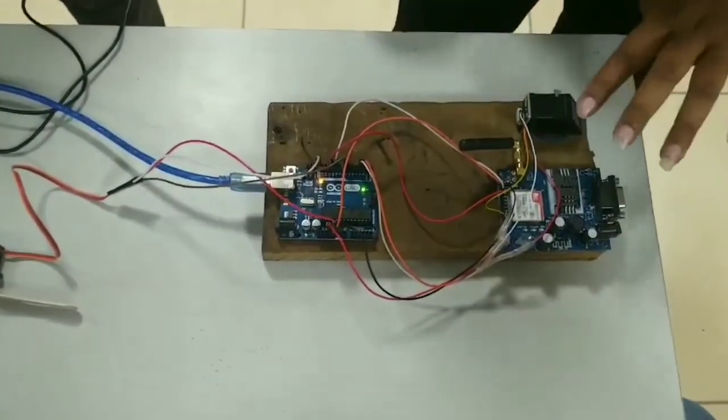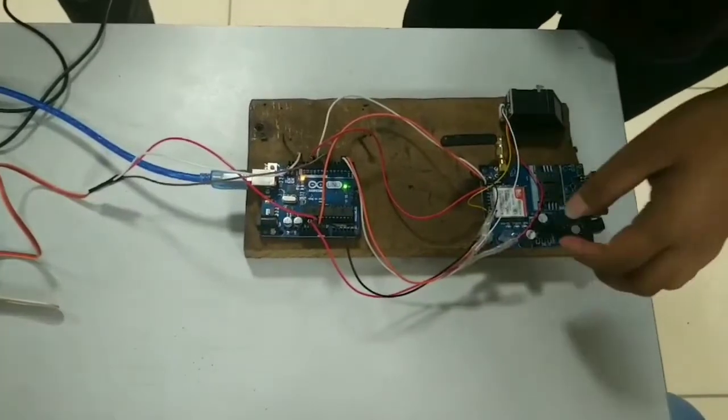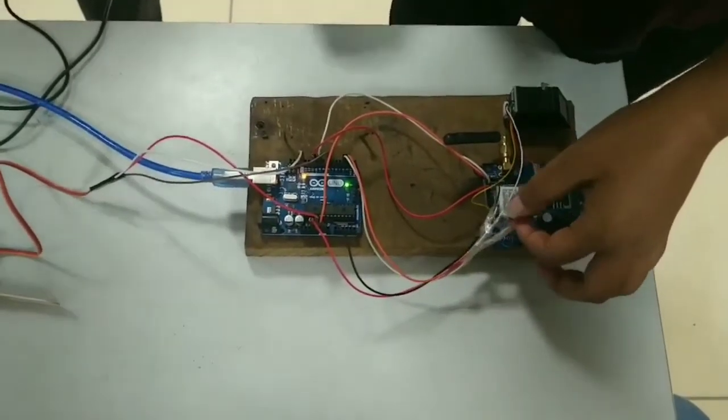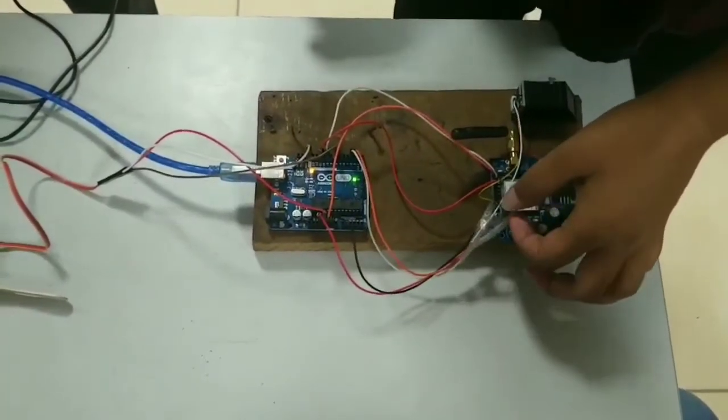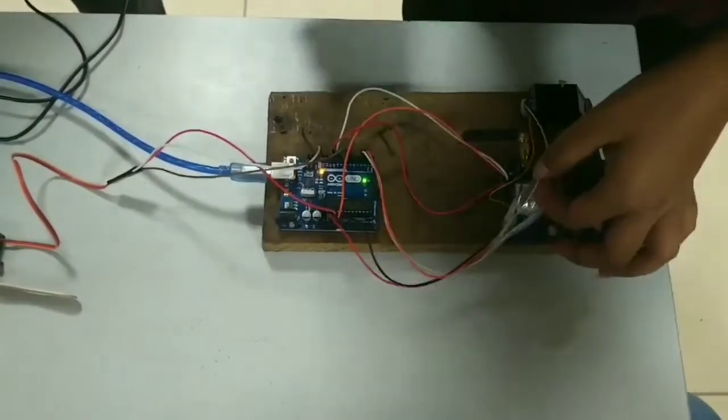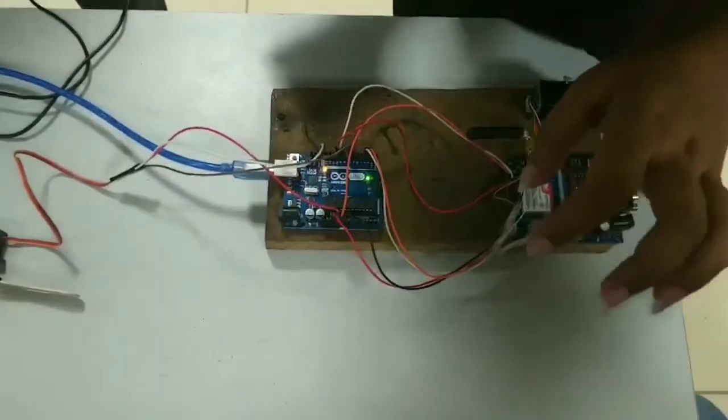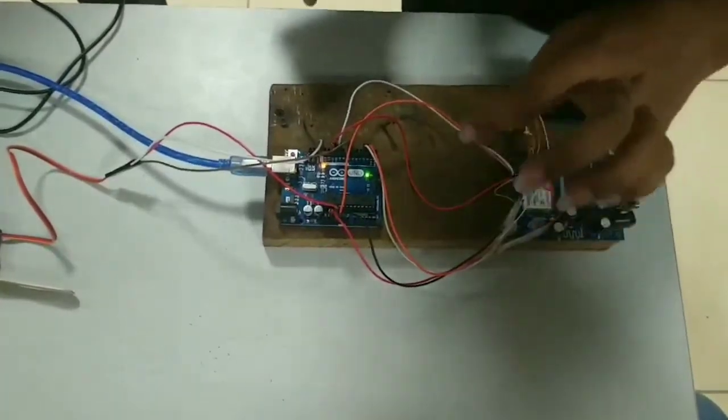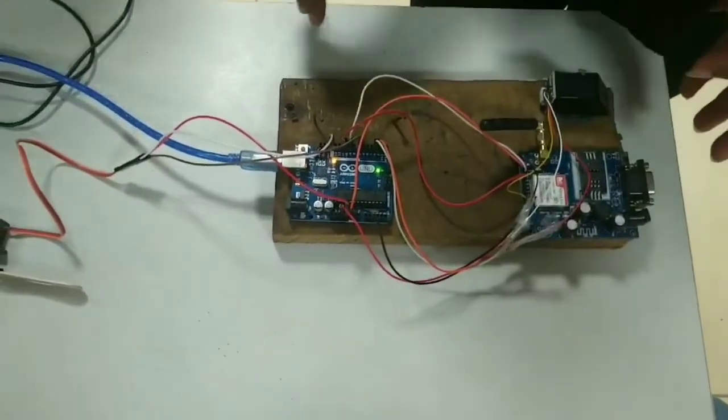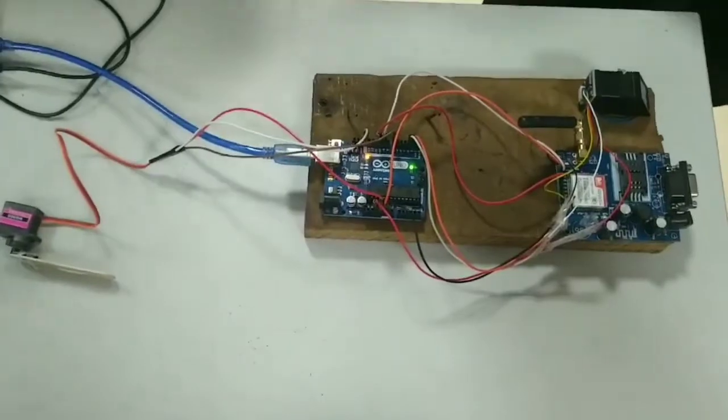For the fingerprint sensor, red wire is connected to 3 volts, white wire to pin 2, black wire to ground, and yellow wire to pin 3. Now Omlan will continue with the coding.